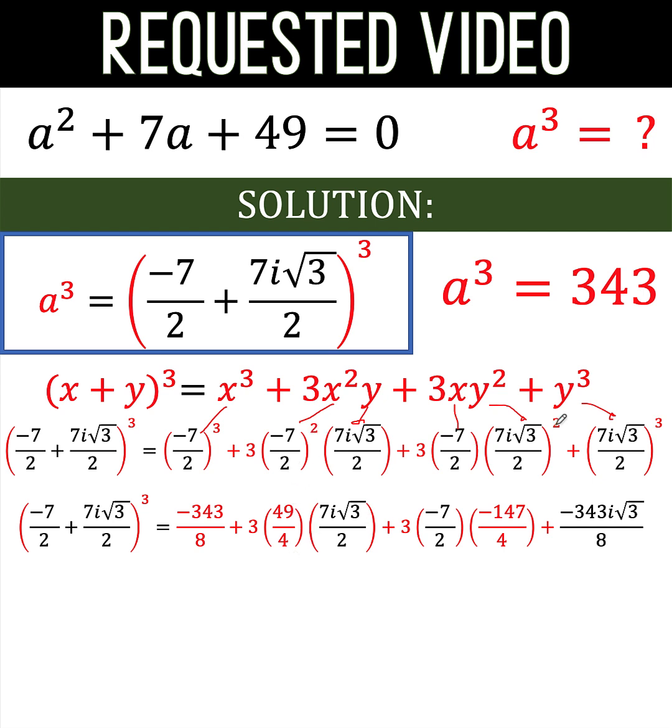the square of 7i times the square root of 3 over 2 is negative 147 over 4. In here, the cube of 7i times the square root of 3 over 2 is negative 343i times the square root of 3 over 8. Notice that if you raise i to the third degree, that becomes negative i. That's why you have negative here.